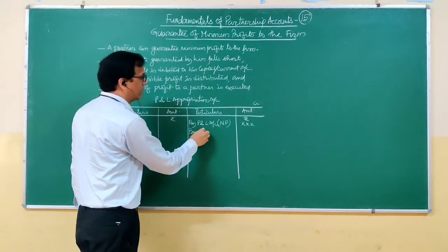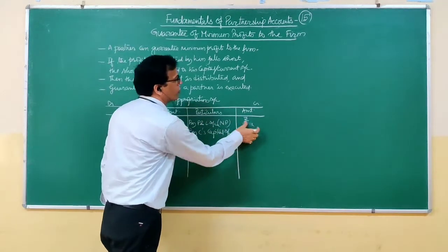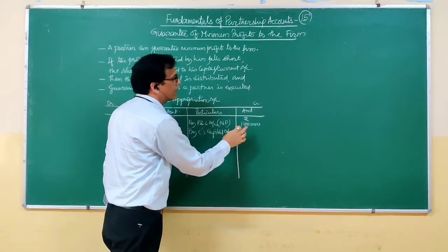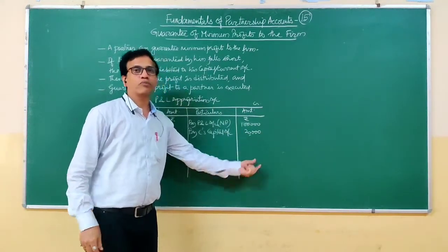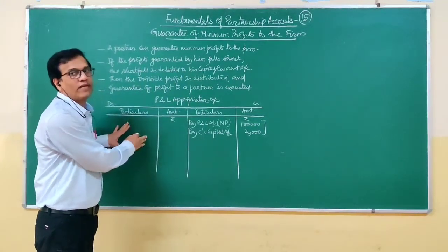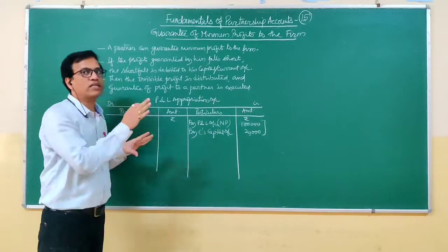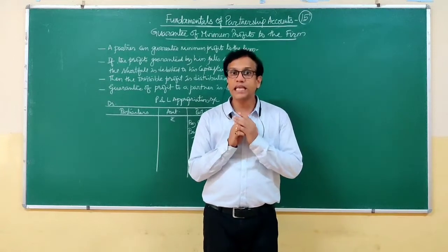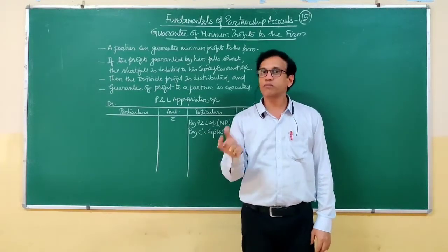Here C has given a guarantee in our case. So we debit C's capital account. Say the amount of profit found was one lakh rupees, but it falls short of twenty thousand rupees on account of C's guarantee. So twenty thousand is taken from C, making the total profit one lakh twenty thousand rupees. Then on the debit side we make necessary adjustments, and whatever remains as divisible profit, we distribute to the partners. This is how we execute the guarantee of minimum profits to the firm by a partner.